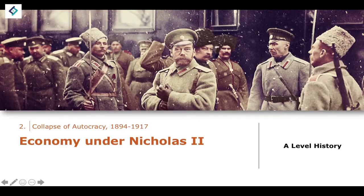The previous couple of lessons explored some of the issues relating to the early period of Nicholas II's reign. We focused on, for example, the problem of the Russo-Japanese War, the defeat of the Russian Empire in that conflict, and the subsequent 1905 revolution, which resulted in the October Manifesto, which promises the State Duma. We then examined a few elements relating to said State Duma.